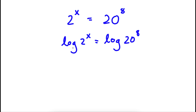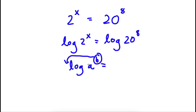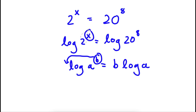An important property of logarithms is that if I have something in the form log a to the power of b, I can actually move this exponent b to the front of the logarithm. So this would be equal to b times log a. So for log 2 to the power of x, I'm going to move the x to the front, and for log 20 to the power of 8, I'm going to move the 8 to the front.